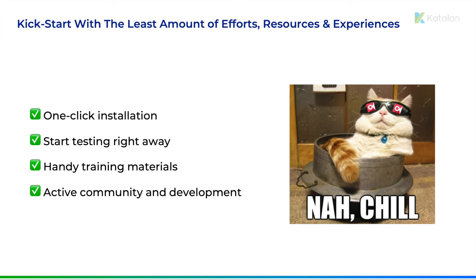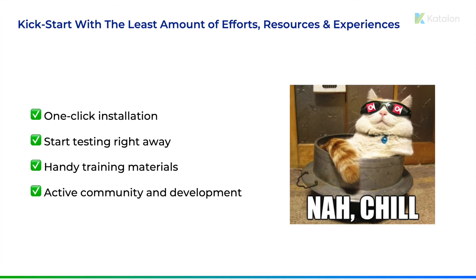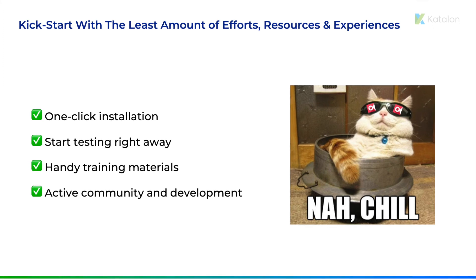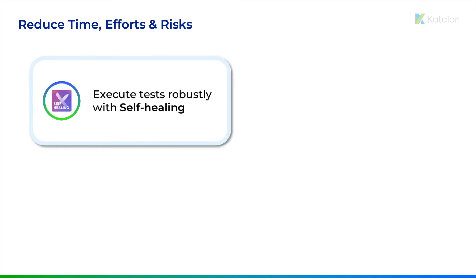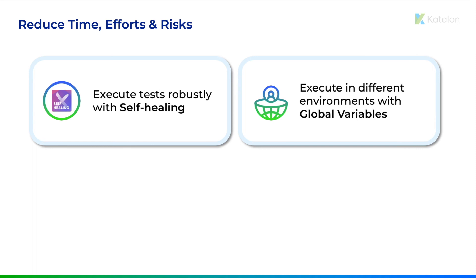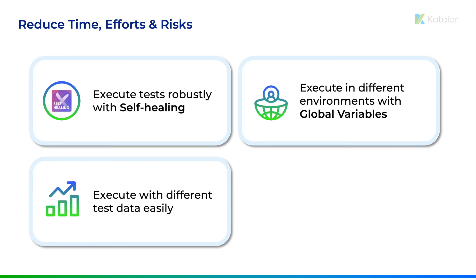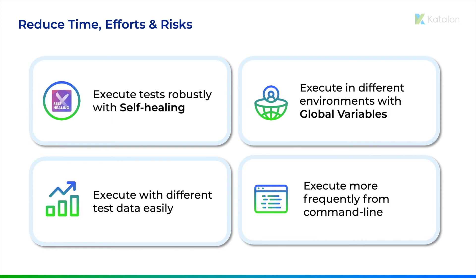Besides all that, when you need to ask questions, there's also an active community using Calon Recorder. If you're already familiar with test automation, we have implemented features that help you automate your test painlessly. Say you have a script consisting of a locator that changes over time — the self-healing feature is going to try out other locators until there's a valid locator for your script. The global variables feature helps reduce maintenance effort by providing the ability to execute a predefined value set in multiple test cases. You can also execute your script using different test data or execute from command line.